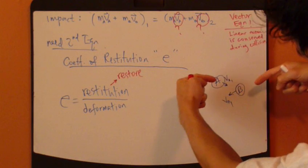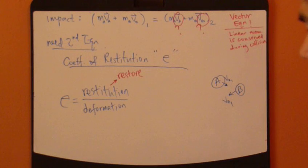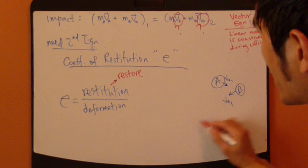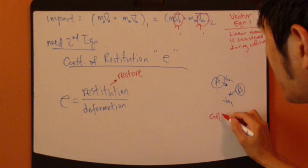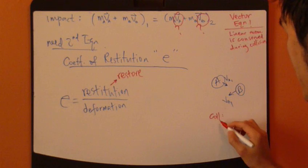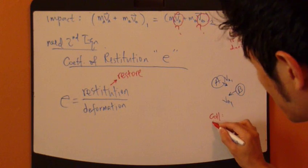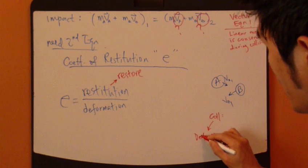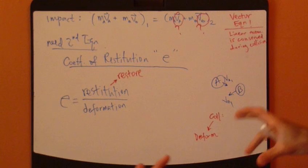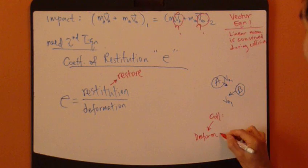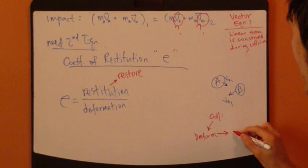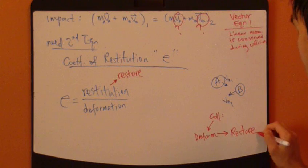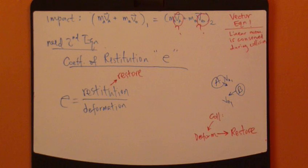Now, during a collision process, during this impact, if you were to slow it down, analyze it more carefully in the fine scale, collision actually can consist of deformation where an object actually deforms first, followed by restitution or restoration where it's restored back into shape.